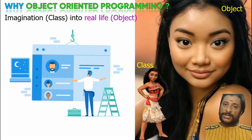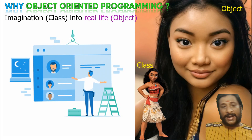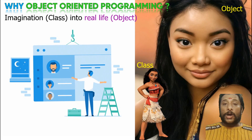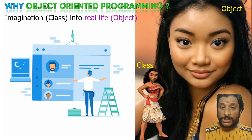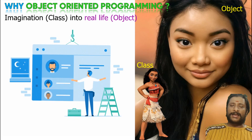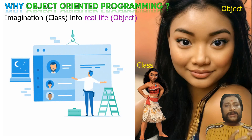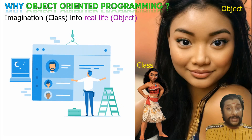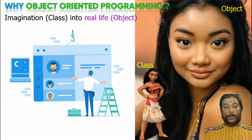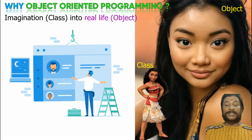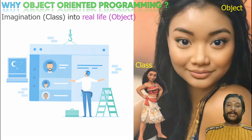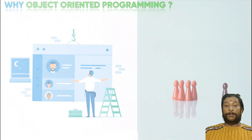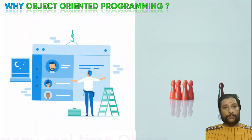I got an imagination and I made it a real thing — that can be achieved with object-oriented programming. Imagination is nothing but a class. From that, I get a real-time object, which is nothing but your objects. So you are able to write your programs with the class-object technique. That is where object-oriented programming becomes really famous.